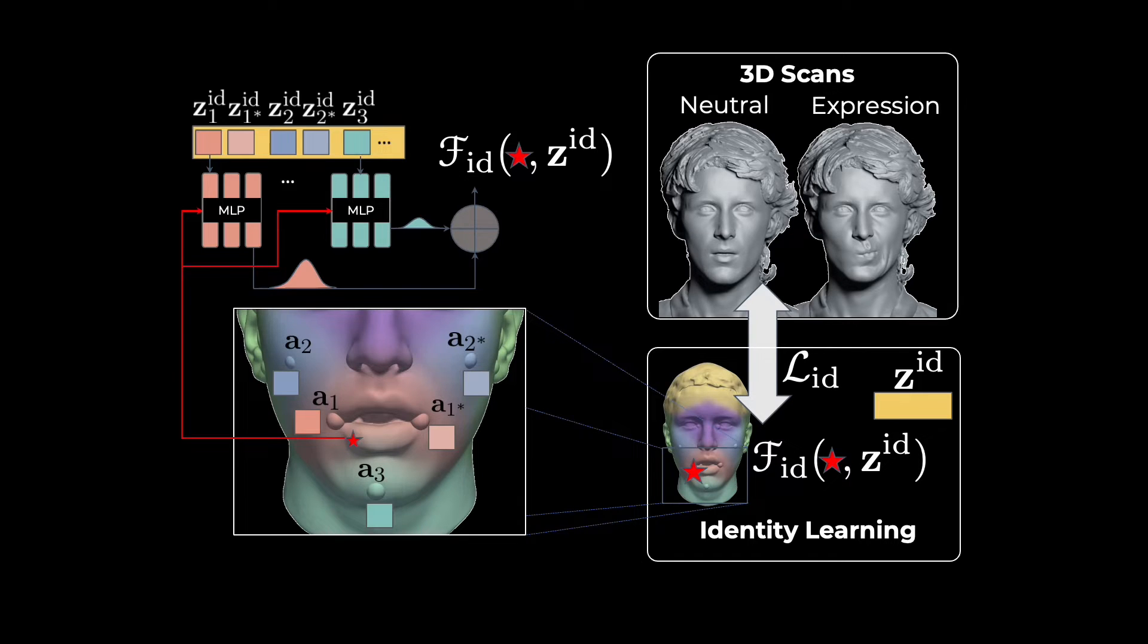The predictions of these local MLPs are blended using a fixed Gaussian kernel, illustrated here by color blending. This compositionality simplifies the learning problem and encourages generalization.